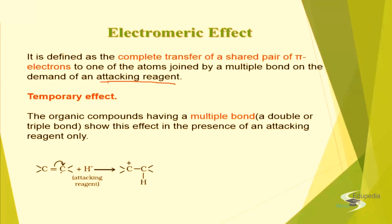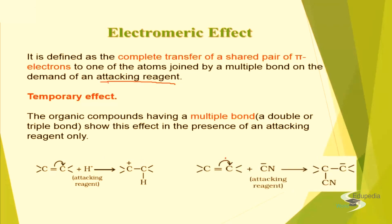The attacking reagent in this case is H+, so it demands the electron from the alkene. This pi bond will shift to one of the carbon atoms where this attacking reagent approaches. The bond will be found between this carbon and hydrogen, and there will be a positive charge on the other carbon atom. Similarly, for a negatively charged attacking reagent, it will attack on this carbon atom and then the bond will shift towards this side. When a nucleophile attacks, the electron shifts away; when an electrophile attacks, the electron shifts towards where the electrophile is attacking.